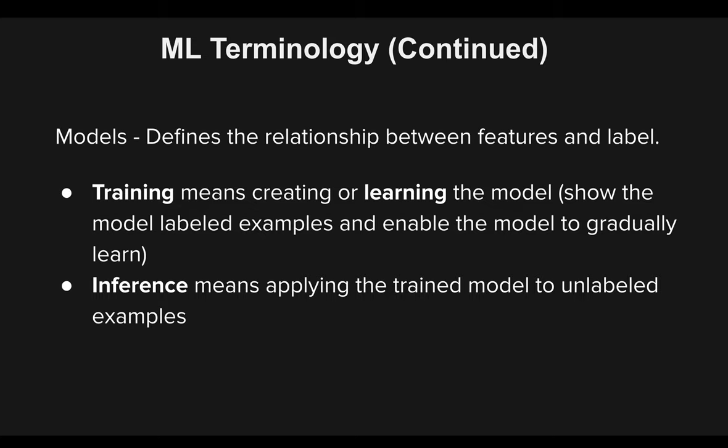The model is the function that defines the relationship between the features and the label — features being the x variable, labels being the y variable. When we talk about models, there are two very common terms. Training a model means creating or learning the model. When we train a model, we're helping it learn past data — specifically, we show the model labeled examples and enable it to gradually learn.